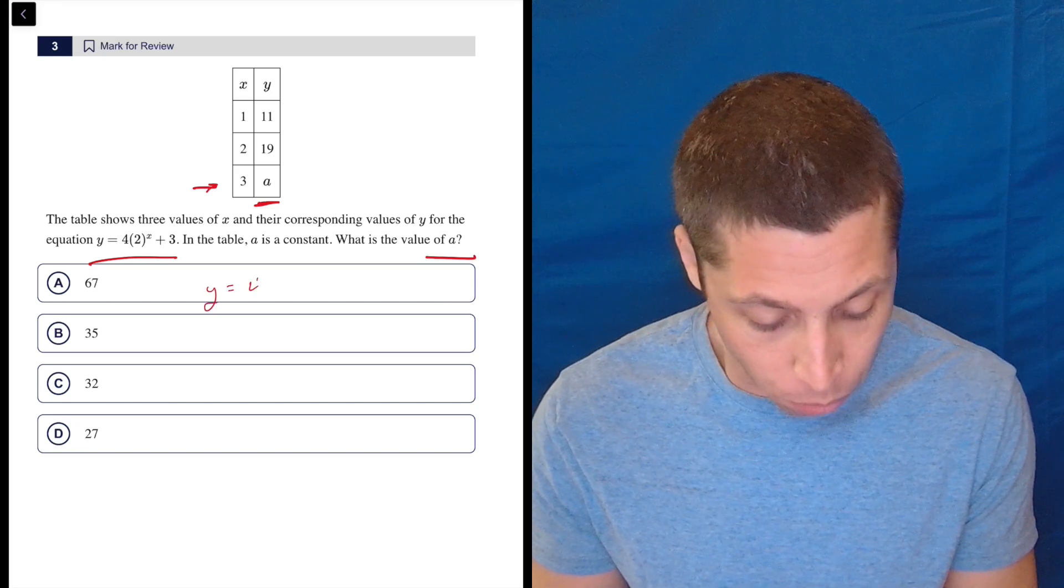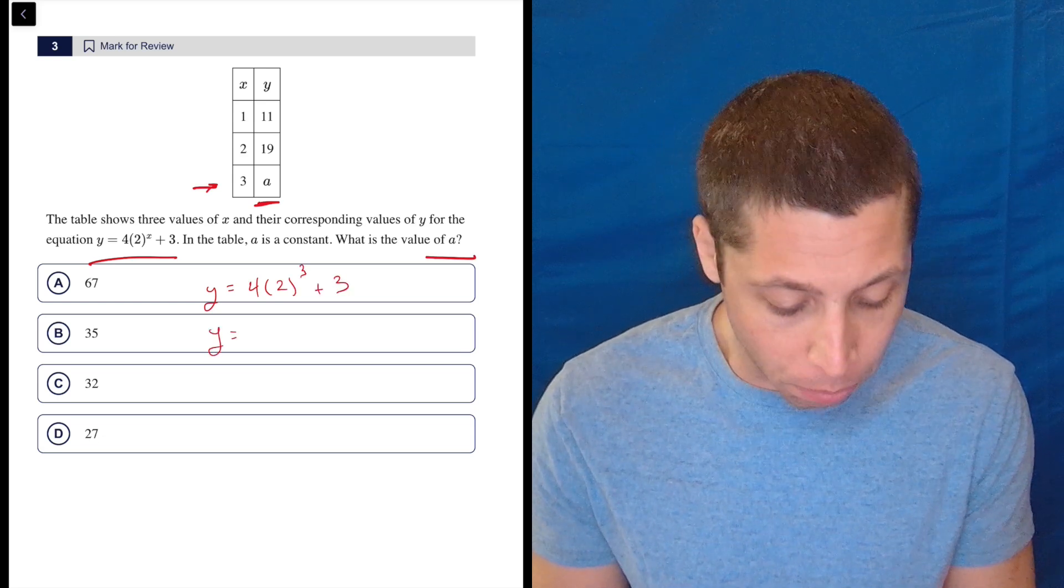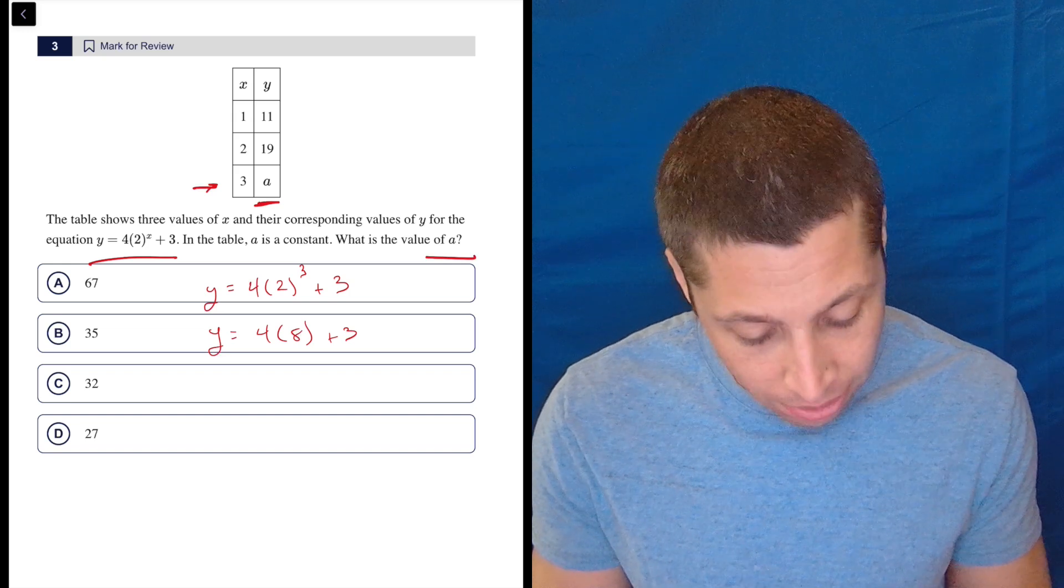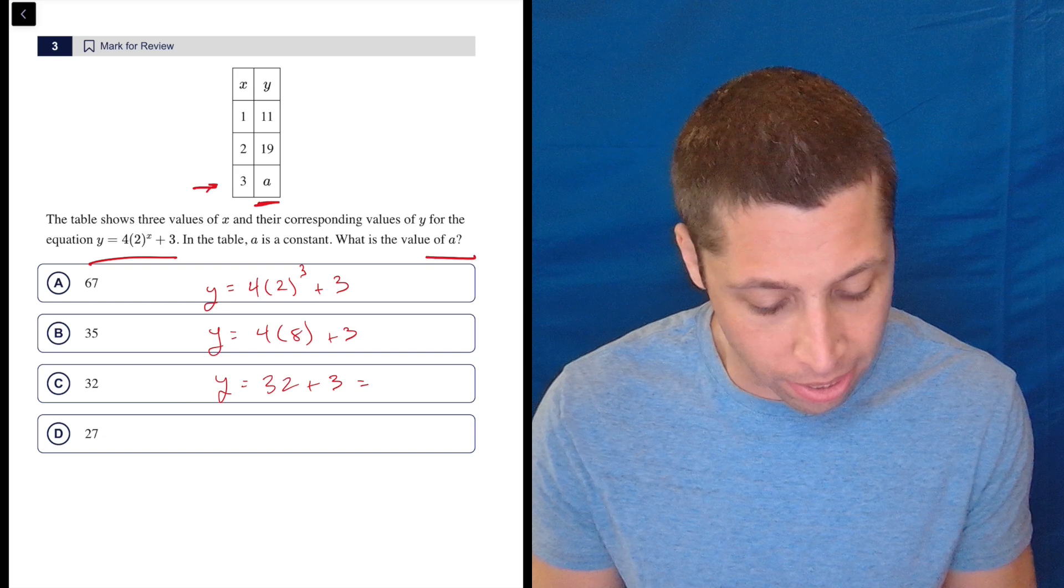So y is equal to four times two to the third plus three. Honestly, I probably wouldn't really go to my scratch paper here for this, but two to the third, I know, is eight. And then y is equal to four times eight is 32 plus three is 35.